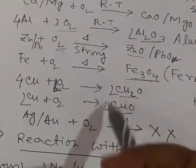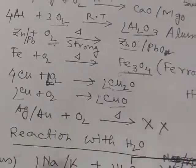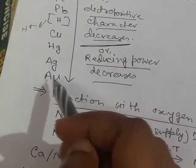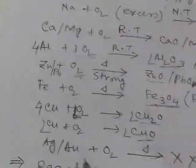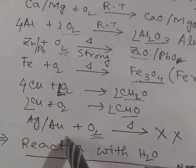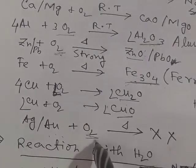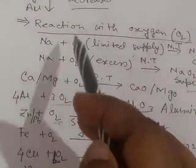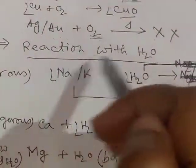Copper reacts with oxygen under strong heating to form cuprous oxide (Cu₂O, copper in +1 state) or cupric oxide (CuO, copper in +2 state). Silver and aurum, being at the lowest position of the activity series, will not react with oxygen — they cannot be oxidized easily. Even if we heat the mixture, there will be no reaction. Thus their tendency to react with oxygen decreases along the activity series.